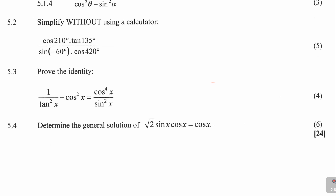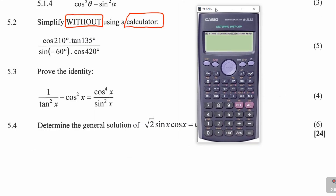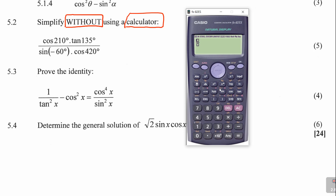Question 5.2 says we need to simplify without using a calculator. Now, the moment they mention these things, I'm tempted to grab the calculator and find out what it is they're trying to hide from me. So let's use the calculator first. Be careful how you enter this in the calculator. It's cos 210, close the bracket, times tan 135, close the bracket. Then sine negative 60, close the bracket, times cos 420, close that. Let's find out what it gives me — it gives me negative 2. So this is just minus 2. I already know the answer, and now I need to work towards this minus 2.